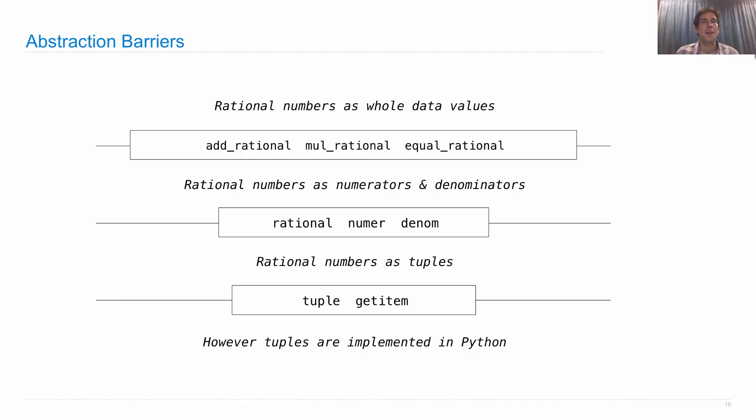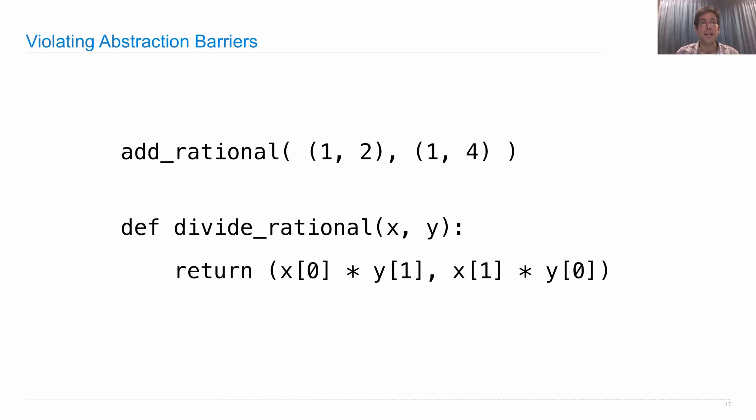So let's look at some code that violates abstraction barriers. Here I've said I'm going to add_rational, but I pass in two tuples as opposed to rational numbers. Now, of course, they're the same thing in our current implementation, but what if I want to change them down the road?